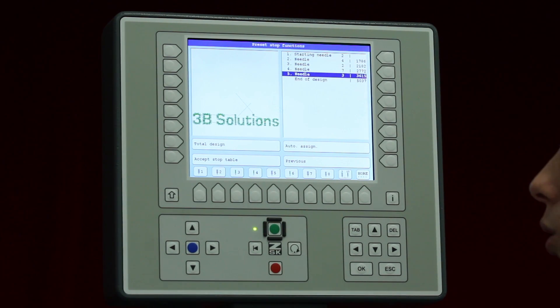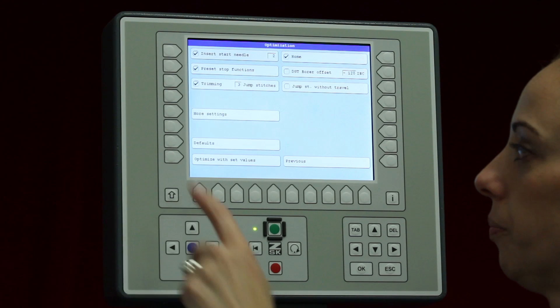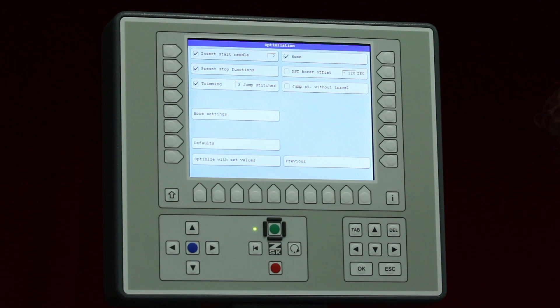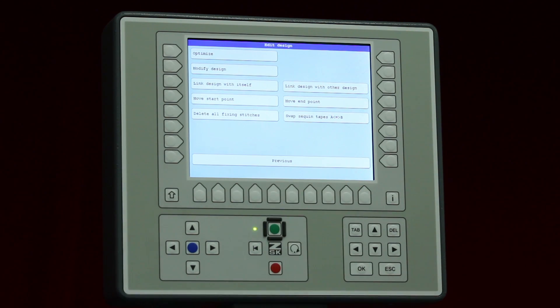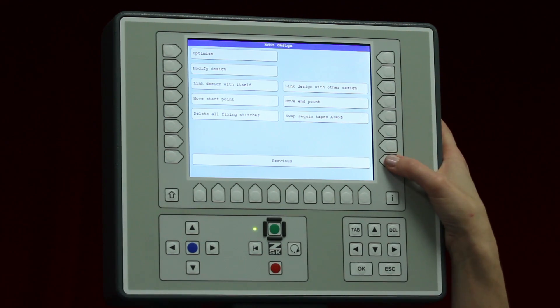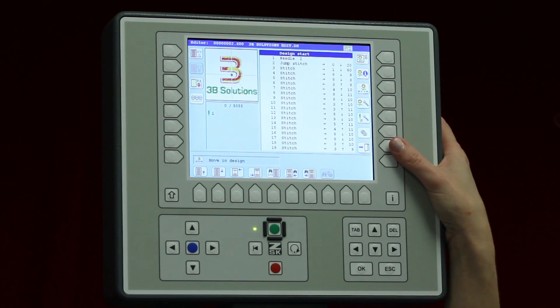Once I am finished with that, I will go ahead and accept my stop table. I am happy with those settings. I'll go ahead and optimize with those set values. Now I am back to my edit design screen. I will go and hit previous. Those are the settings that I wanted to change. I will hit exit.